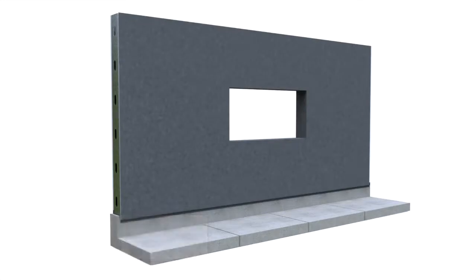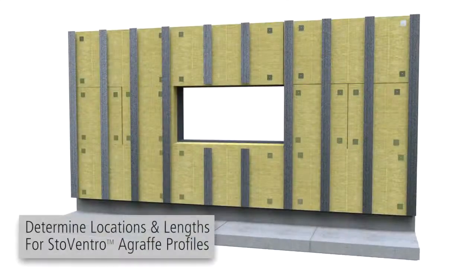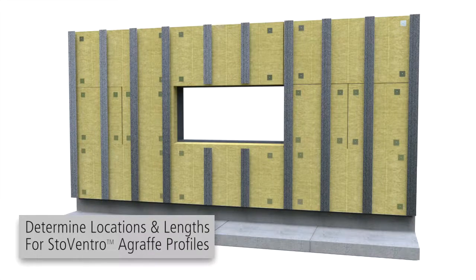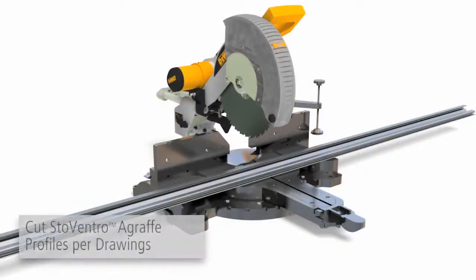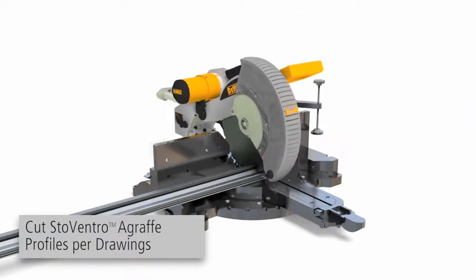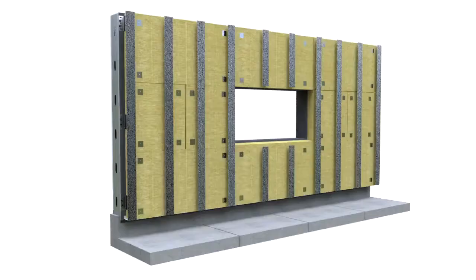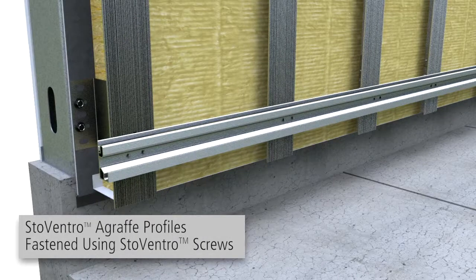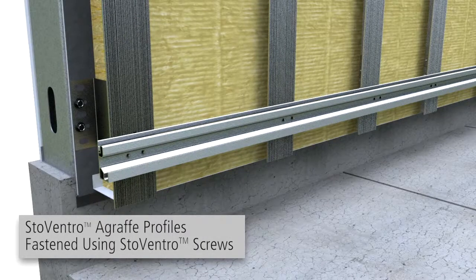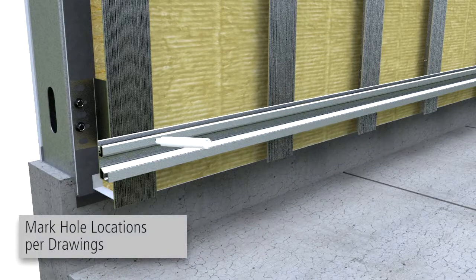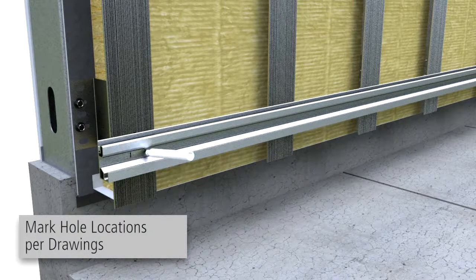StoweVentek glass installation. After the installation of air and moisture barrier, sub-construction and insulation, determine locations and lengths for agraf profiles according to the project-specific drawings. Use a chop saw to cut agraf profiles. Deburr all cut edges. Horizontal agraf profiles are fastened to the T-profiles using StoweVentro sub-construction screws using a minimum of two screws per connection. Mark the hole locations as shown on the project-specific drawings.